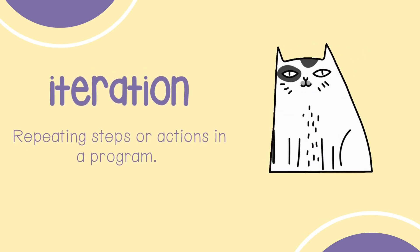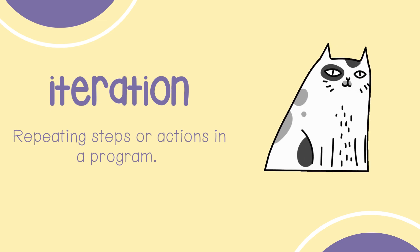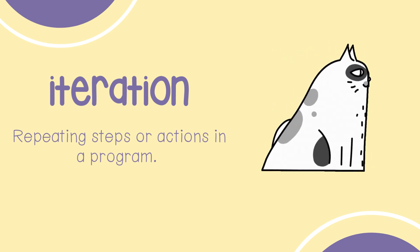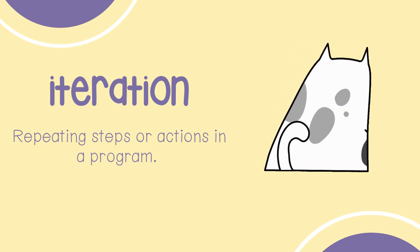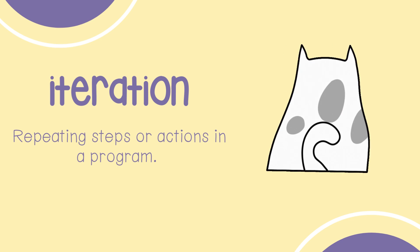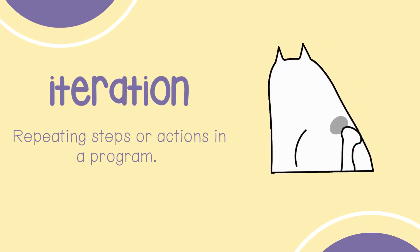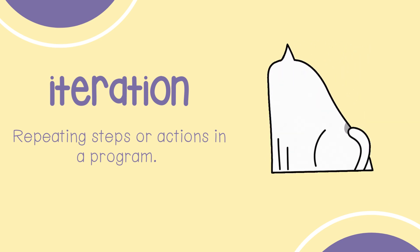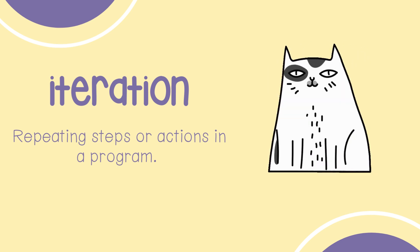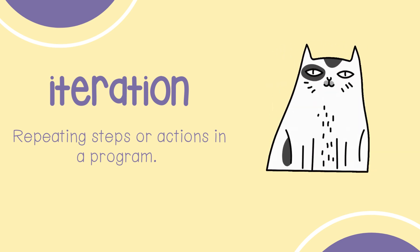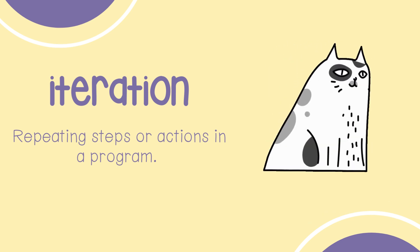Iteration means a repeating step or actions in a program. This is similar to a loop — like this cat is on a loop, it keeps spinning in circles. But each time it makes one turn, that is an iteration. So you count the iterations within the loop.